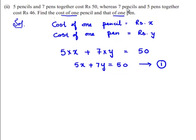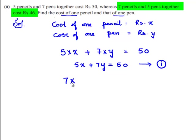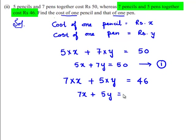Using the second condition — 7 pencils and 5 pens together cost 46 rupees — the cost of 7 pencils is 7x and the cost of 5 pens is 5y. Both together equal 46 rupees, so 7x plus 5y is equal to 46. This is equation number 2. These are the required linear equations.